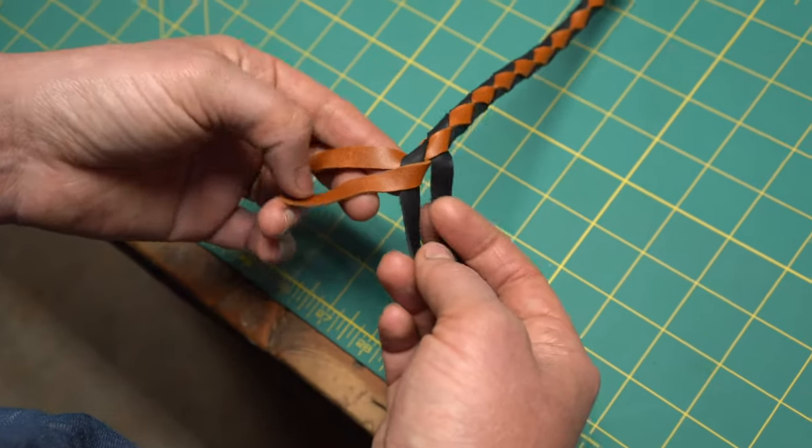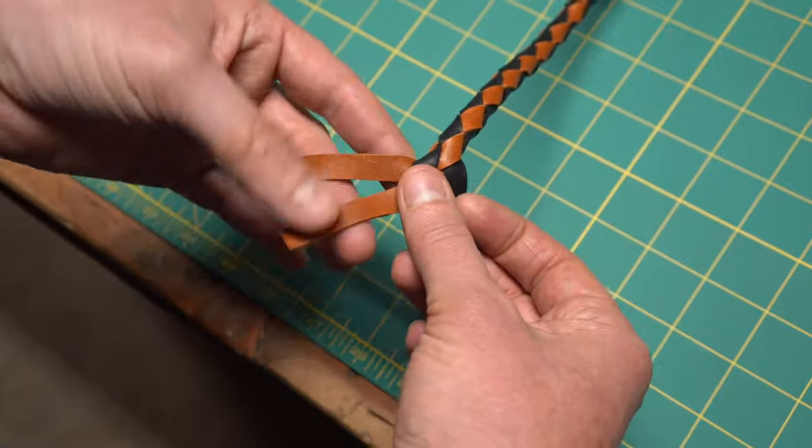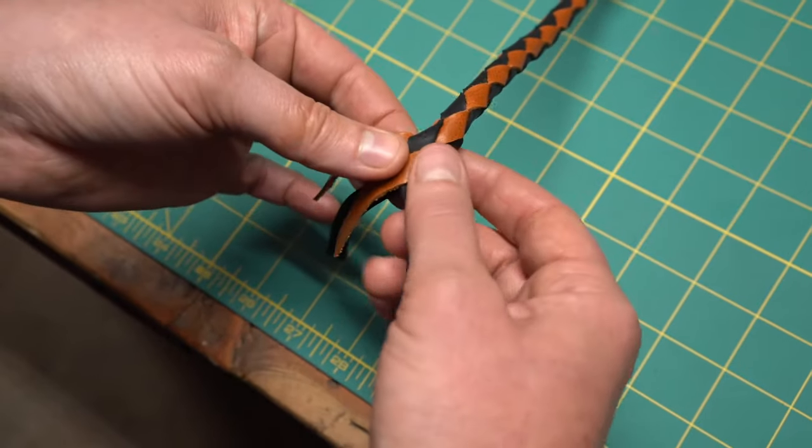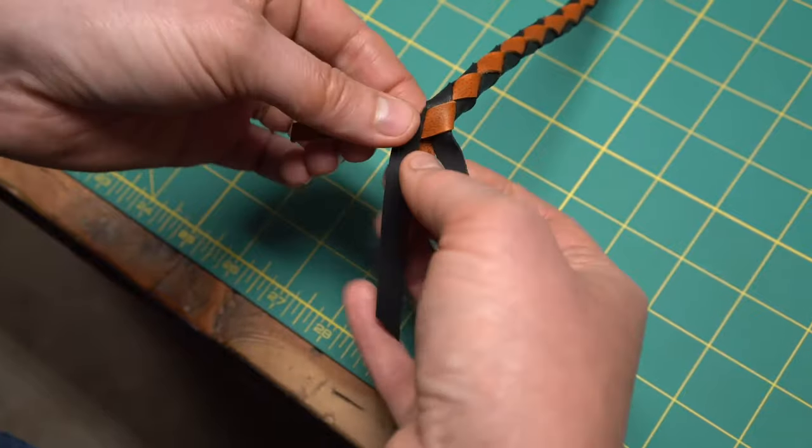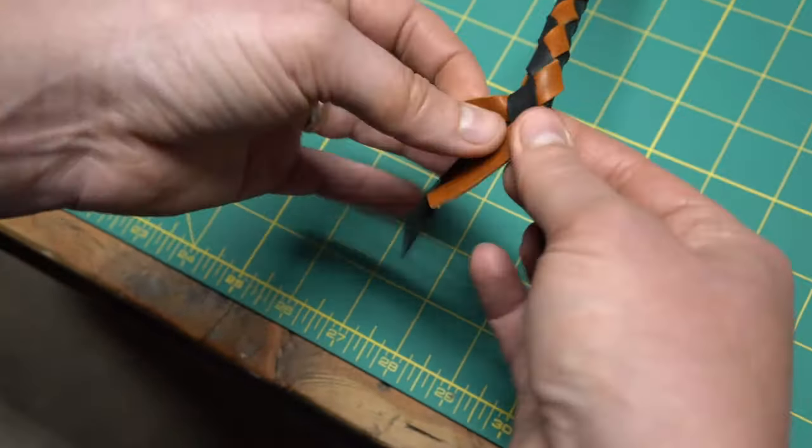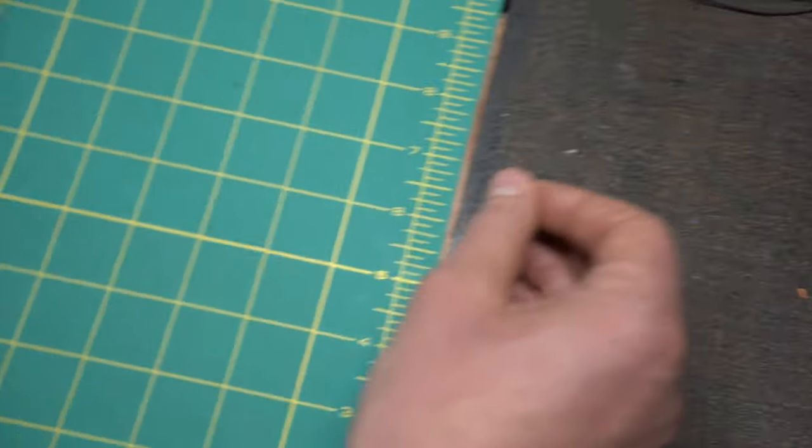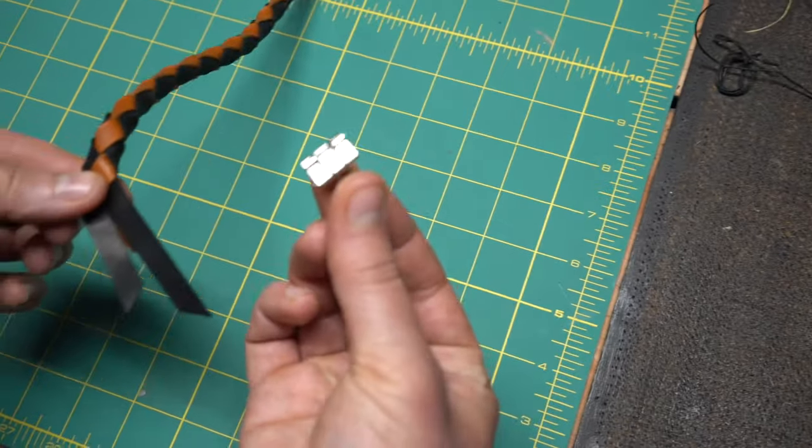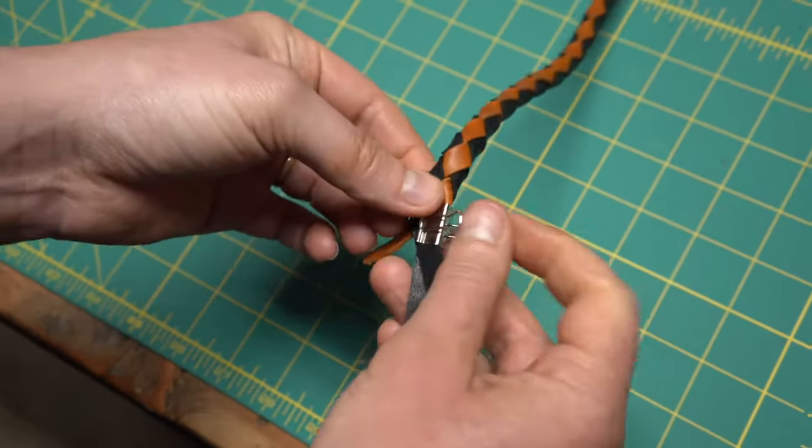So when you come to the end of your braid, you're getting close to the end of your leather strips, you're just finishing up the last few. You're going to need something to hold it in place for this next step. And I use these little alligator clips and you can just clip it on the end. You could also just use a paper clip.